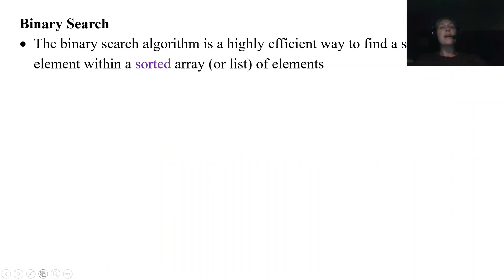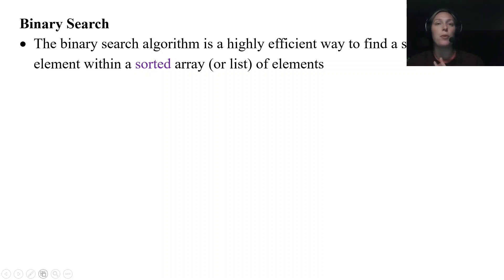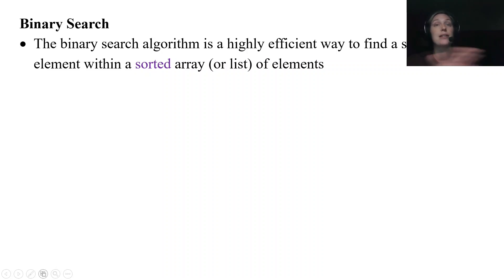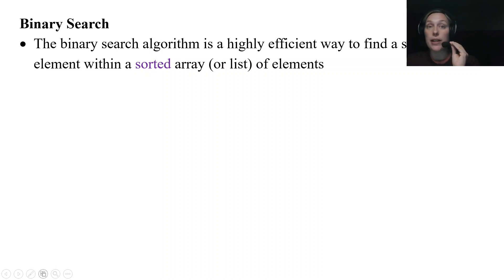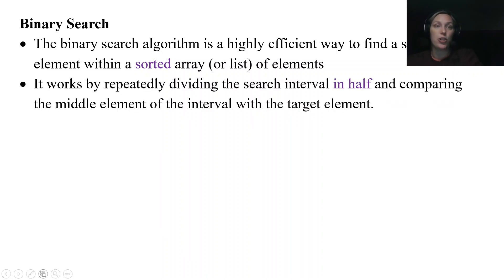Binary search is a very efficient way to find a specific element. The key requirement is that the array must be sorted first — that was not the case with a linear search, where you just start at the beginning and go through. The binary search requires sorted data. Sorting algorithms are coming up in the next couple of lessons, but for right now we'll assume our arrays are already sorted. That is a very important piece for binary search: it has to be sorted.